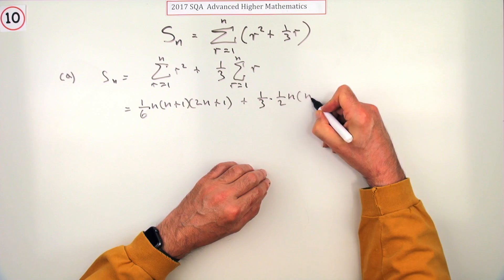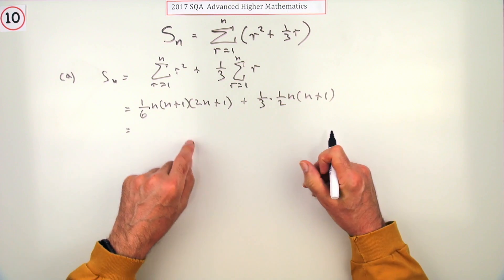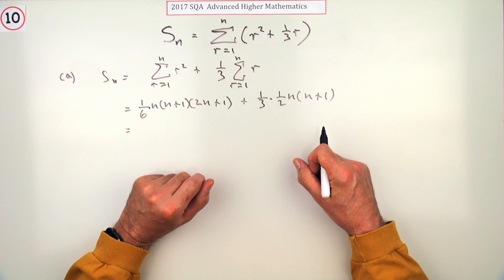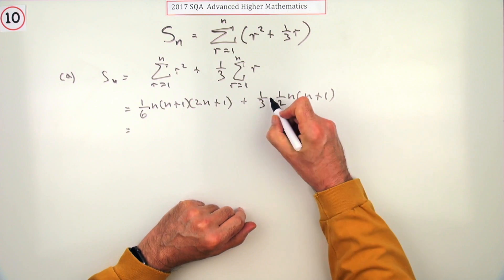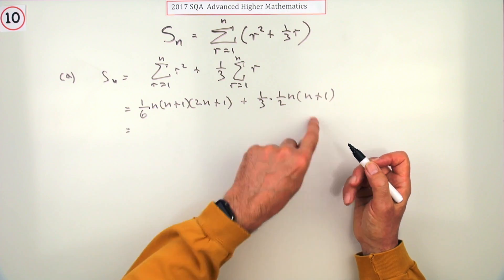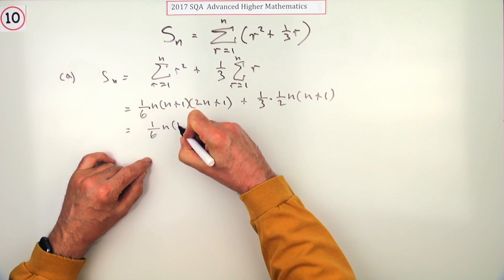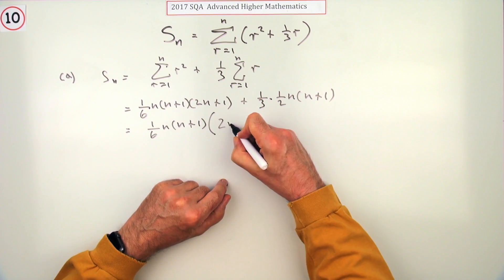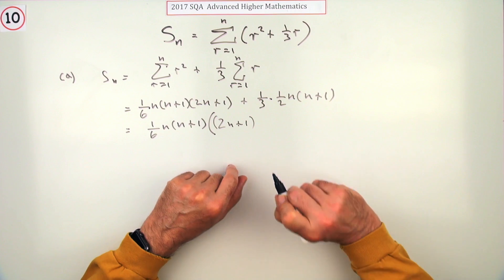This is going to be a third of—and that's the one you do remember, that's half n, half n times n plus one. The sensible thing to do is factorize it. Maybe that's why it said factorized form rather than simplify your answer, because you don't want to be multiplying that out when they've got so much in common. They've both got a sixth, they've both got n, they've both got n plus one, so you can take out a sixth of n times n plus one.